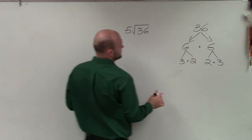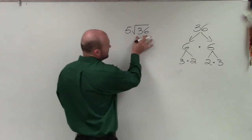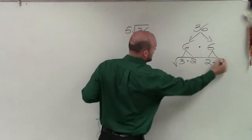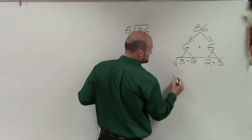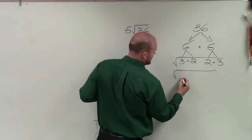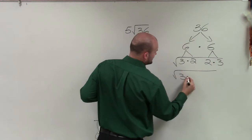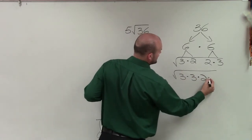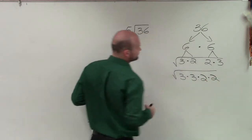Let's look at how we can rewrite this. If I rewrite the square root of 36 as a product of its primes, that gives us the square root of 3 times 3 times 2 times 2.